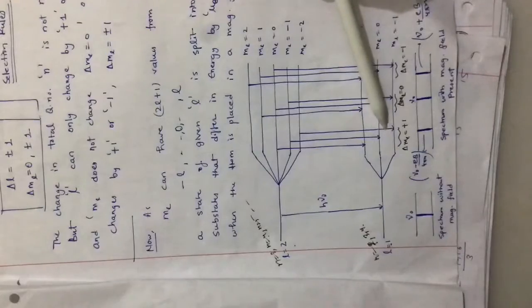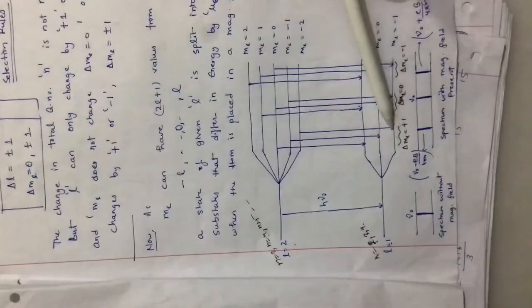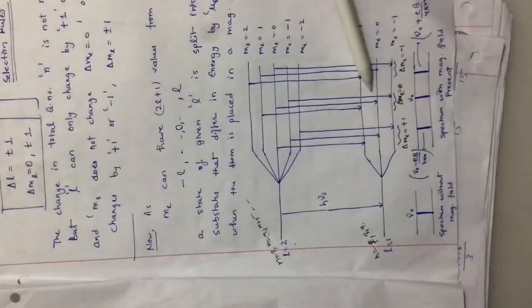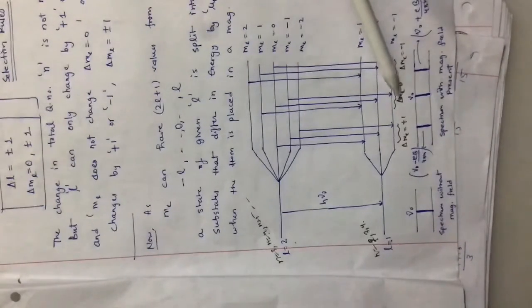When this transition happens, there is a selection rule which says that Δml should be either equal to zero or equal to plus or minus one. There cannot be Δml greater than plus or minus one. For Δml equal to zero we get the same characteristic frequency, and when Δml is equal to plus one or minus one there is a corresponding change due to the magnetic interaction.